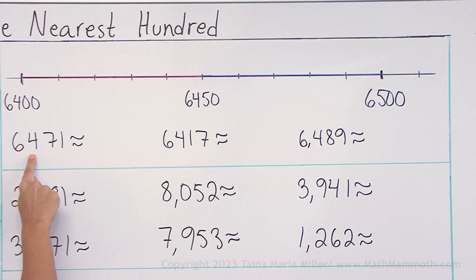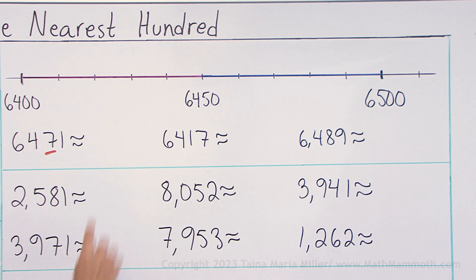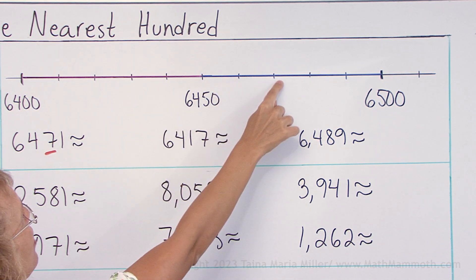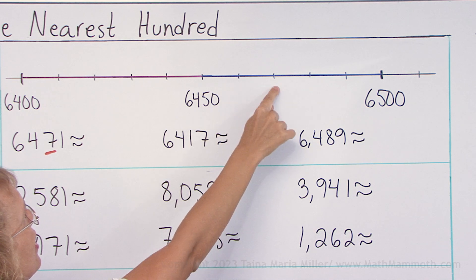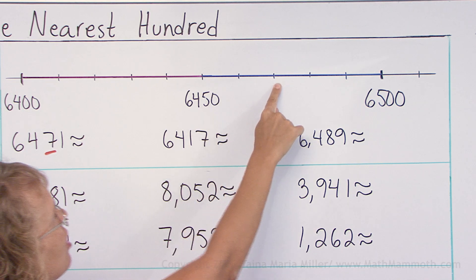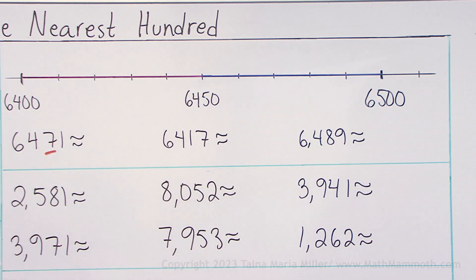6471. You can just look at the tens digit. 7 means you round up, right? It's somewhere here. Here's 6460 and 70, 71. So it's rounded up to 6500.